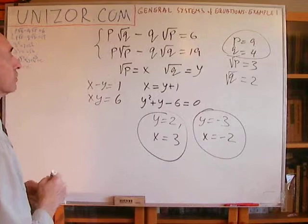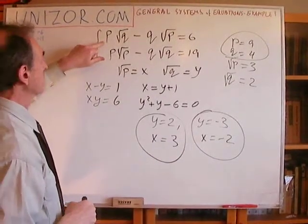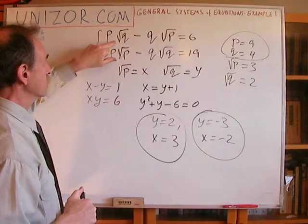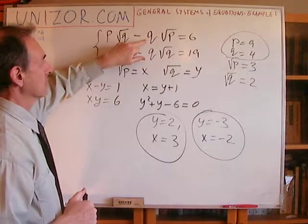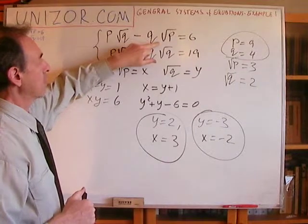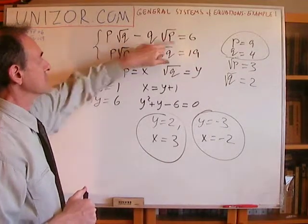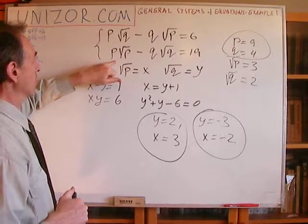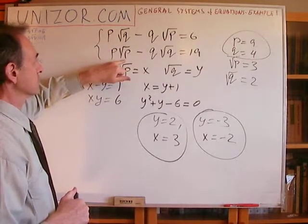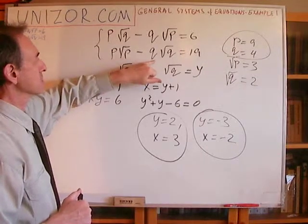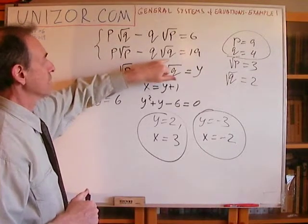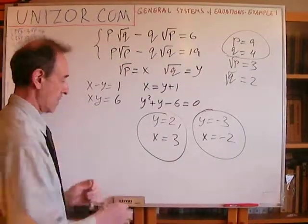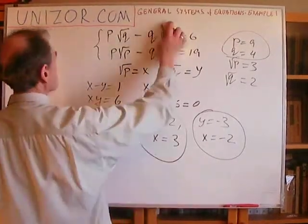Let's check: P is 9 times square root of Q which is 2, that's 18; minus Q is 4 times square root of P which is 3, that's 12; 18 minus 12 equals 6. Correct. And 9 times 3 is 27, minus 4 times 2 is 8; 27 minus 8 equals 19. Correct. Everything is fine.